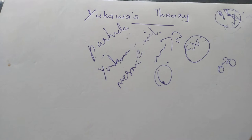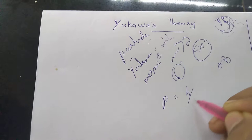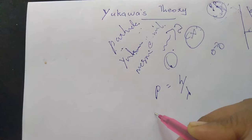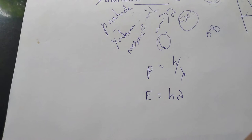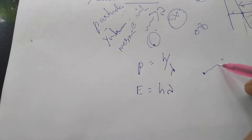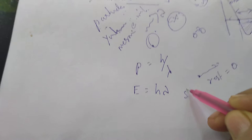Using the de Broglie wavelength equation, p is equal to h by lambda. Planck's equation is E is equal to h times nu, where nu is the frequency. The photon is transferred in the electromagnetic field. For strong nuclear force, this exchange becomes significant.